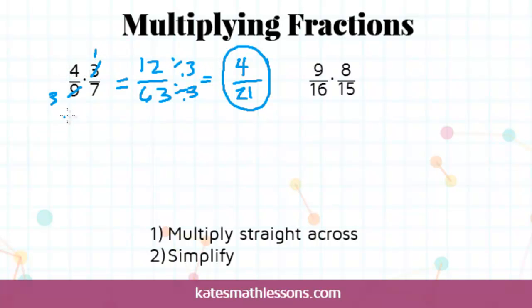4 times 1 is 4, 3 times 7 is 21. You can do it either way, so you can choose to simplify at the beginning or the end. I usually tend to simplify at the beginning because then I'm using smaller numbers when I multiply.